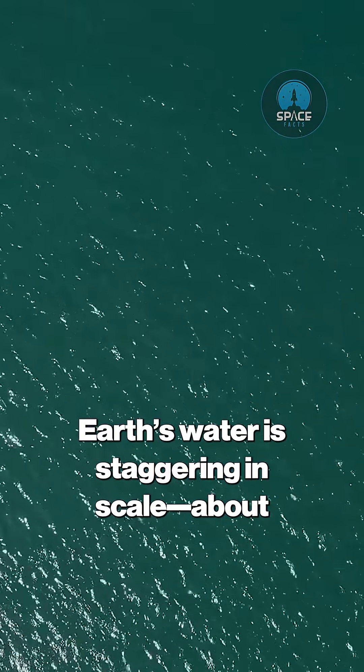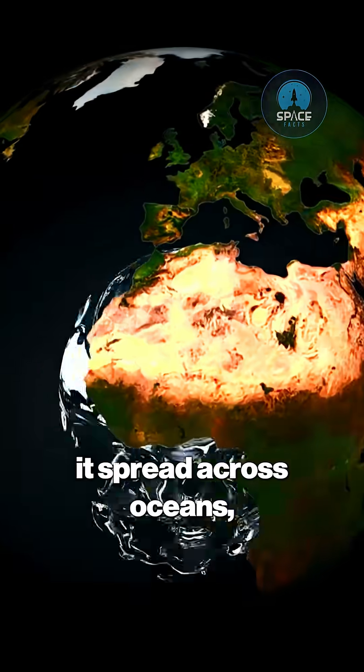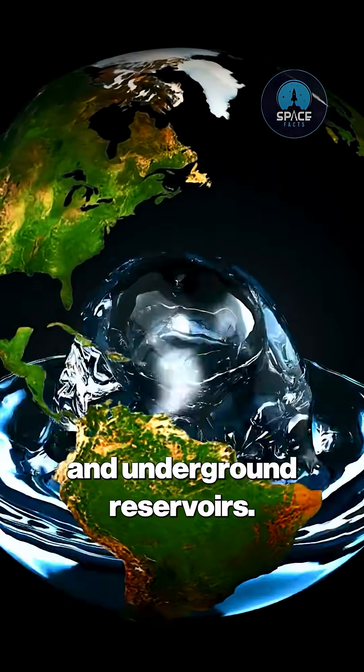Earth's water is staggering in scale. About 1.4 billion cubic kilometers of it spread across oceans, rivers, lakes, and underground reservoirs.